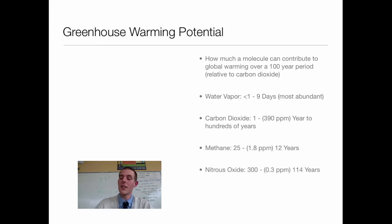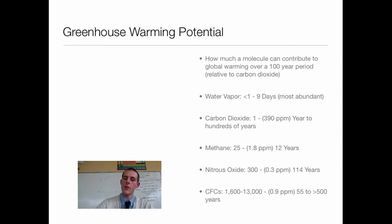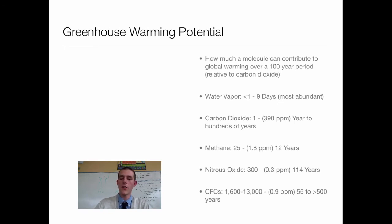Then we jump way up to nitrous oxide (N₂O), with 300 times the warming potential of carbon dioxide. Its current concentration is 0.3 parts per million and it sticks around in the atmosphere for 114 years. And then the big one — CFCs. Not only do they damage the ozone layer, they are anywhere between 1,600 and 13,000 times more potent than carbon dioxide in warming potential. CFCs are a whole class of gases, so some are 1,600 and some are 13,000. Currently as a group they're about 0.9 parts per million and can last anywhere between 55 and 500 years. They trap a lot of heat and stick around for a long time, which is why they have such a high warming potential.